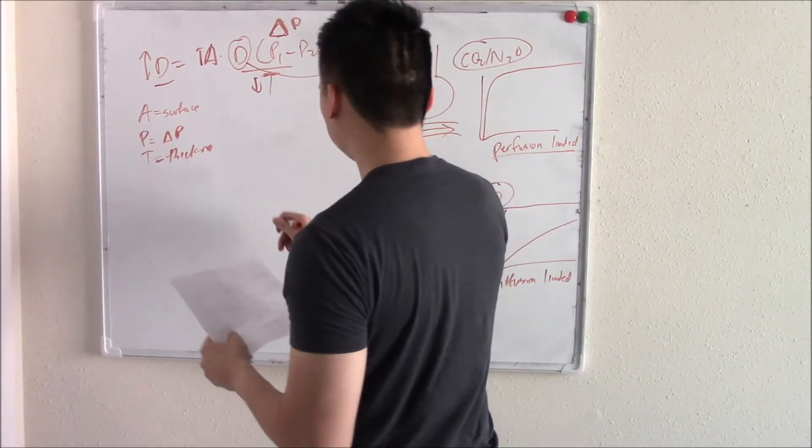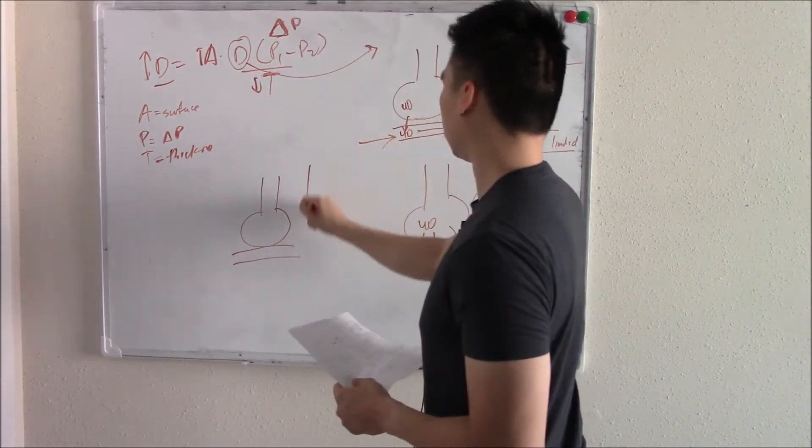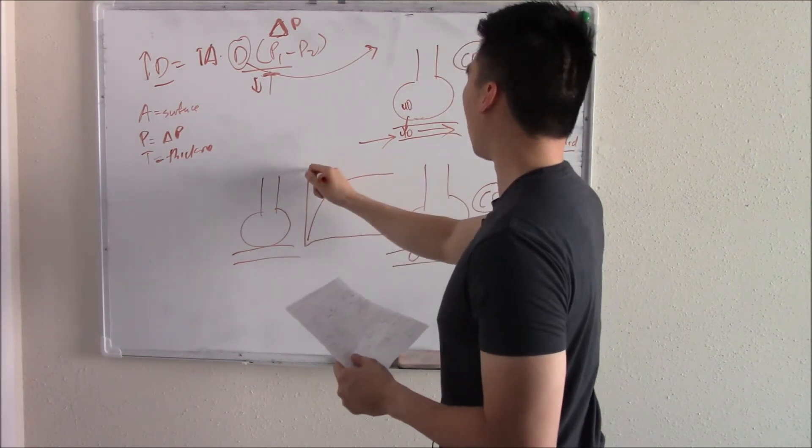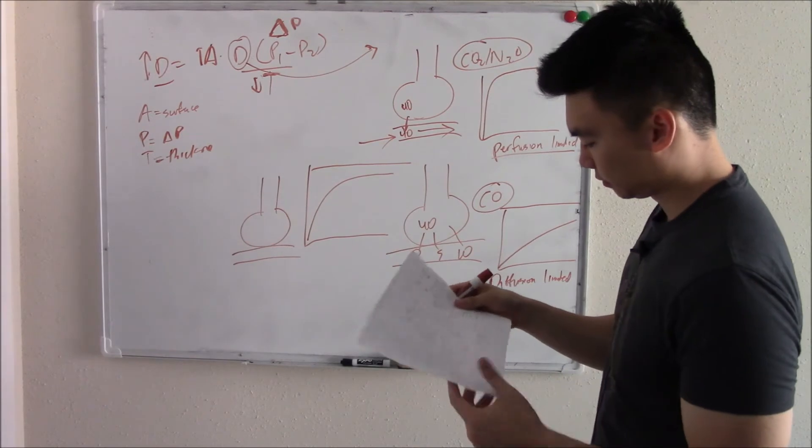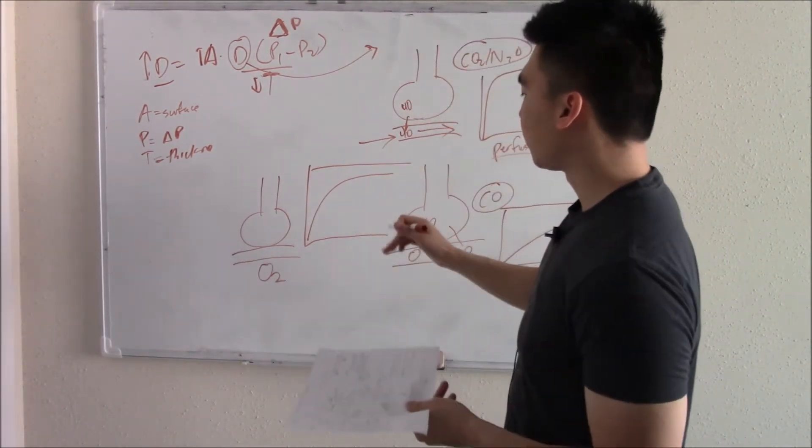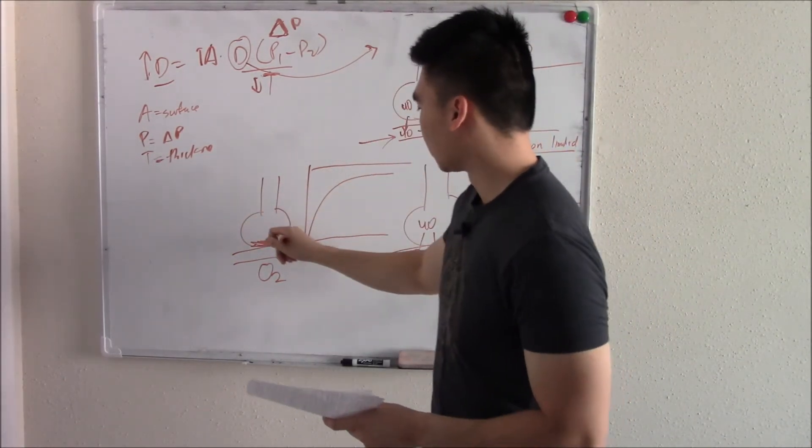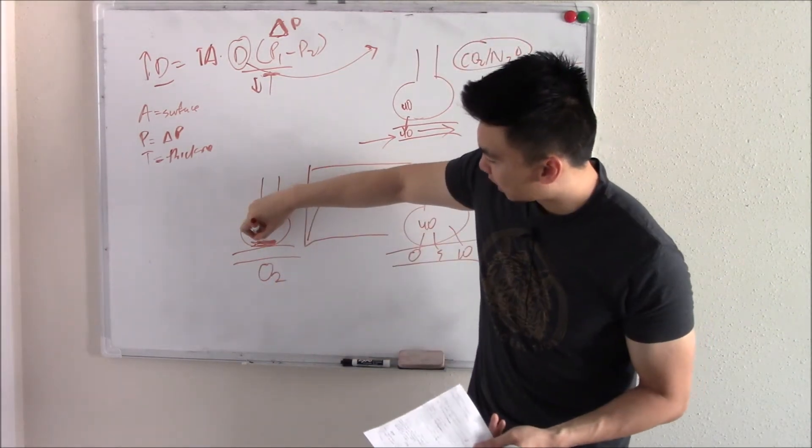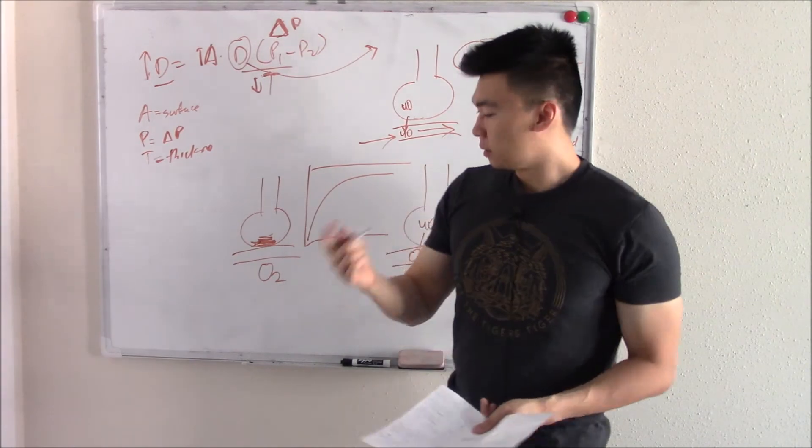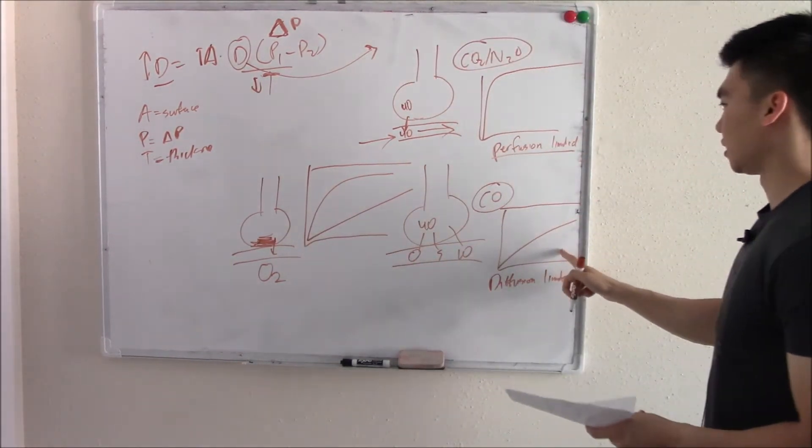Now, oxygen kind of splits the difference. Our good friend, oxygen, kind of splits the difference. Kind of almost reaches equilibrium. So oxygen kind of splits the difference. Now, some things can affect this. You can have fibrosis. And fibrosis, what does that do? What happens if you thicken this membrane? Will that diffuse quicker, diffuse slower, diffuse slower. So how would it look like? Look like this, kind of look like this, right? Diffuse it slower.